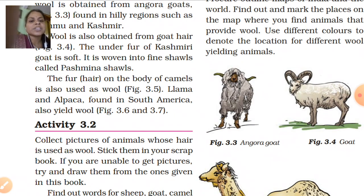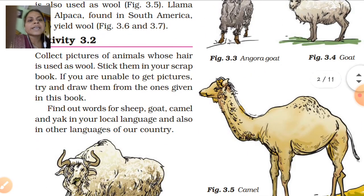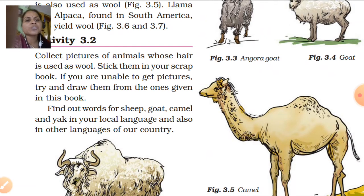Now, activity 3.2: Collect pictures of animals whose hair is used as wool and stick them in your scrapbook. If you are unable to get pictures, try and draw them from the ones given in this book. You have to do this activity in your activity column, in the back side of your fair notebook. On the front side, you will do the questions and answers for the chapter.